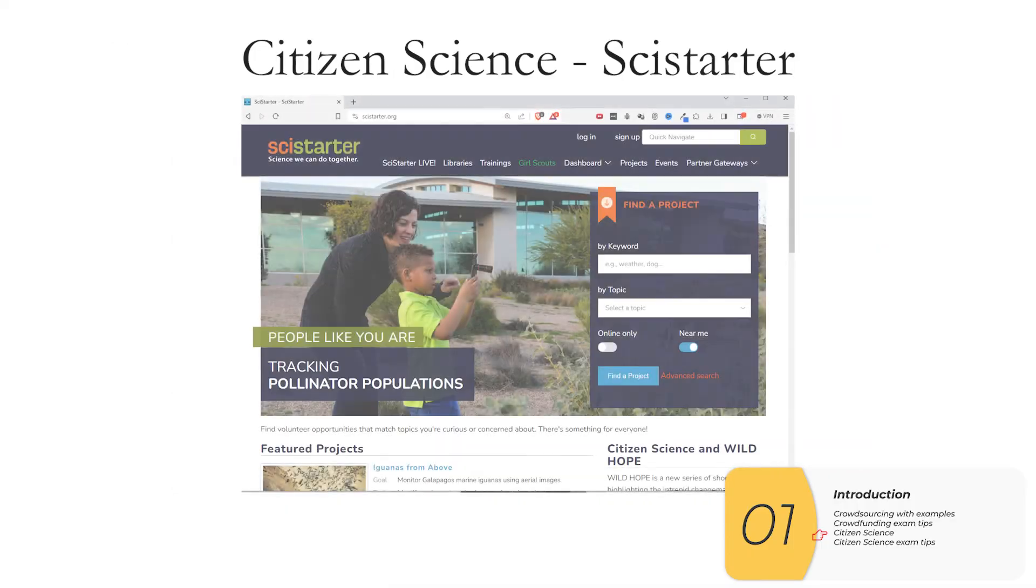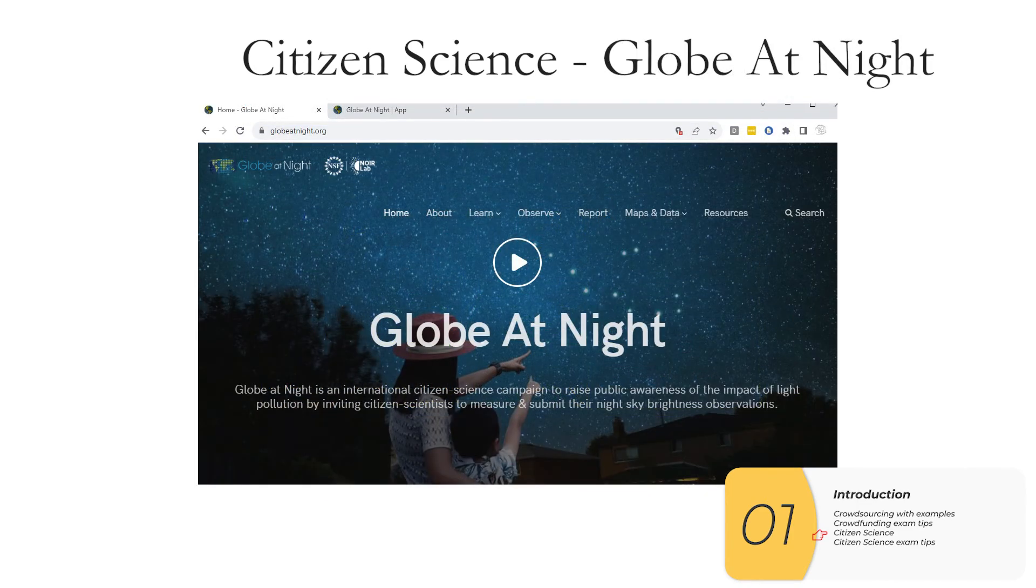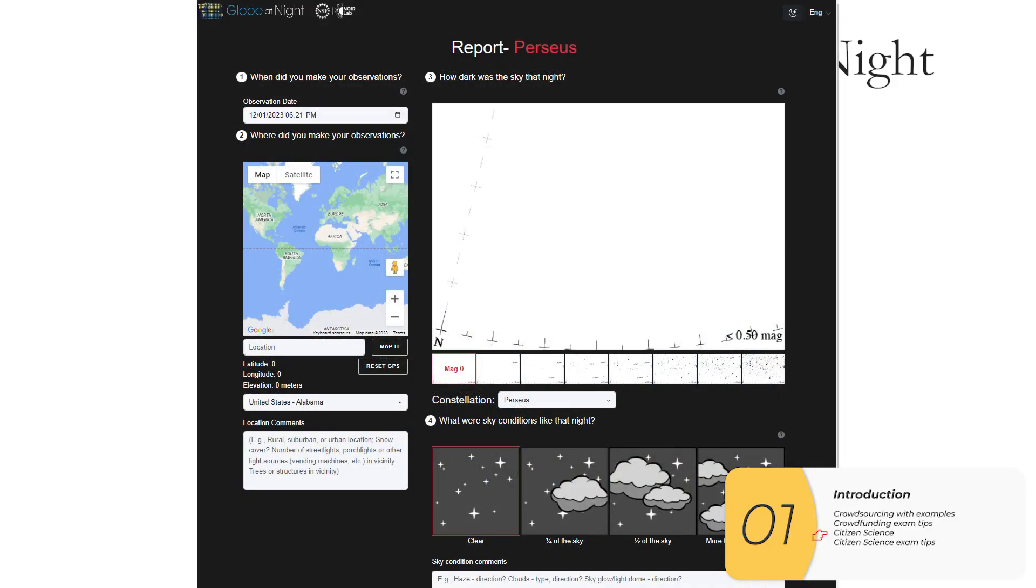If you're looking to participate in a citizen science project, you can go to SciStarter webpage, and there's all sorts of projects on this page. Here's one that's been popular for a couple of years now. It's called Globe at Night, and it measures light pollution with crowdsourced data.